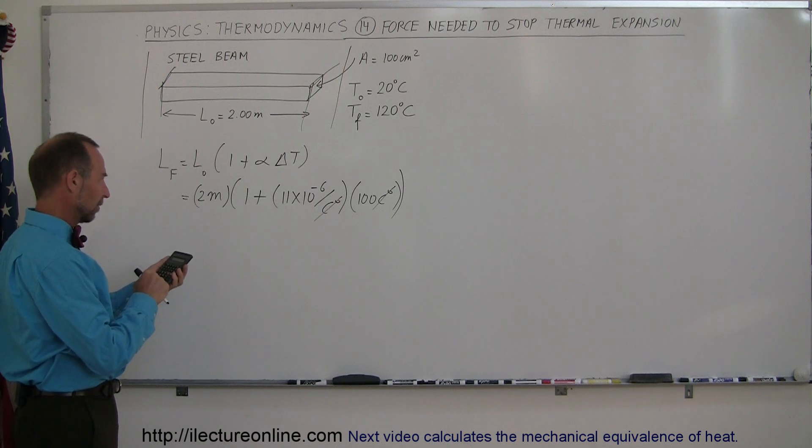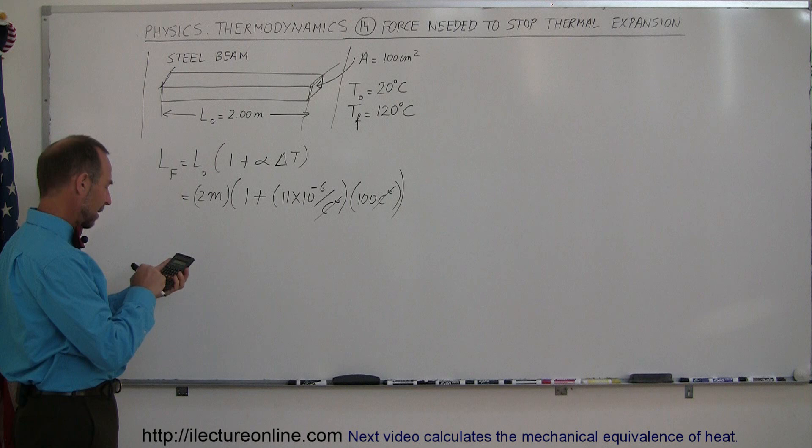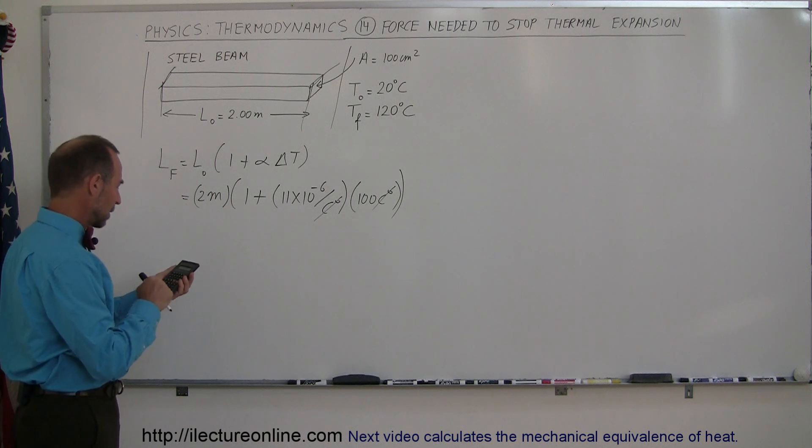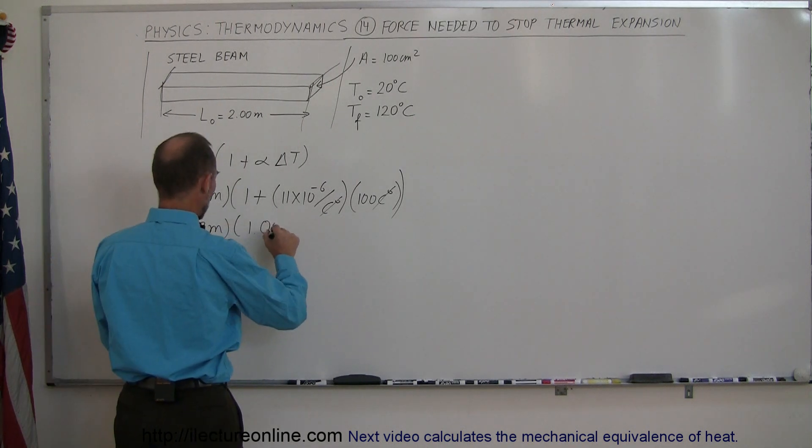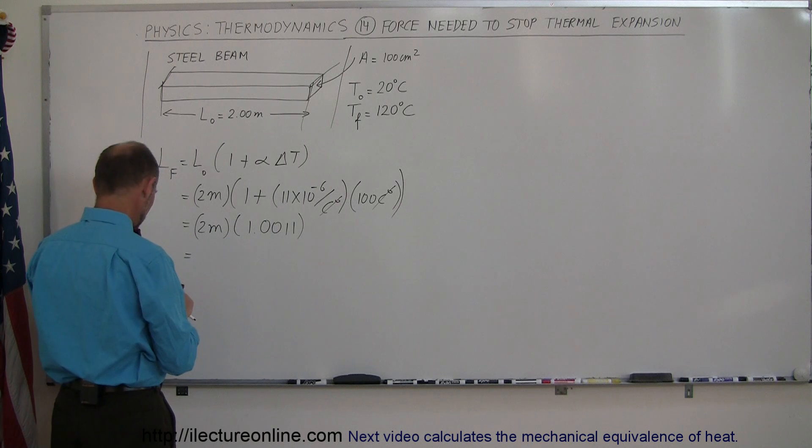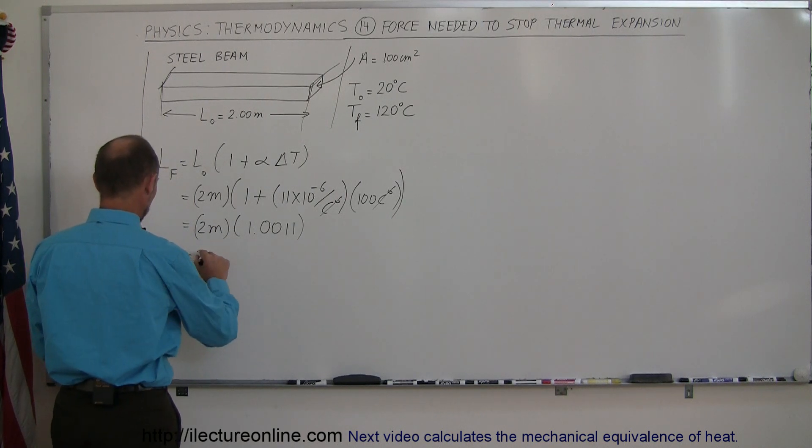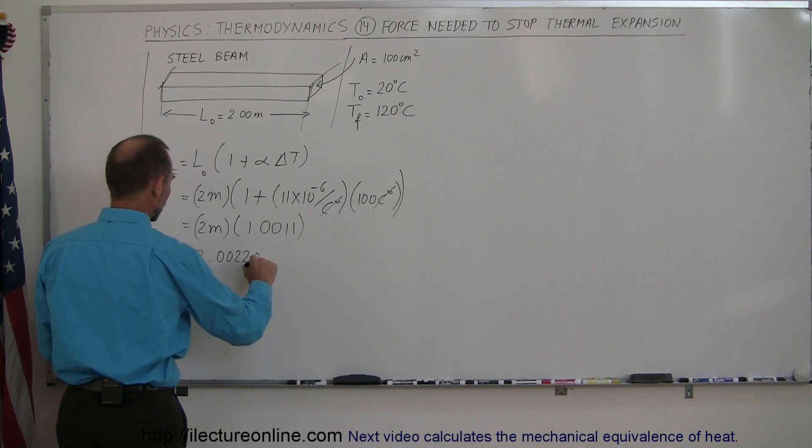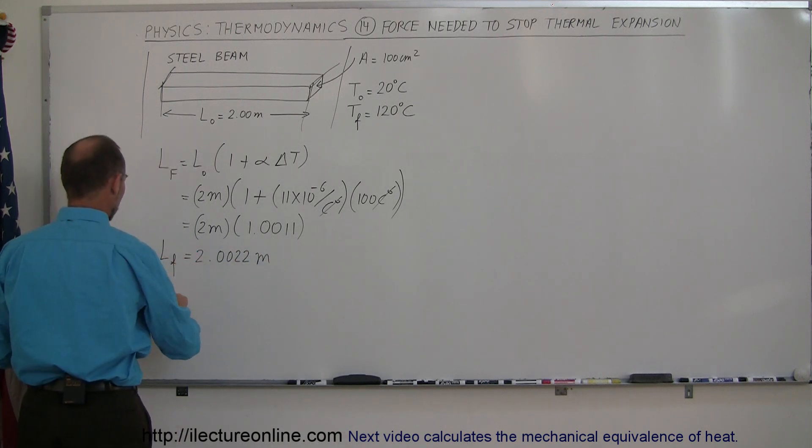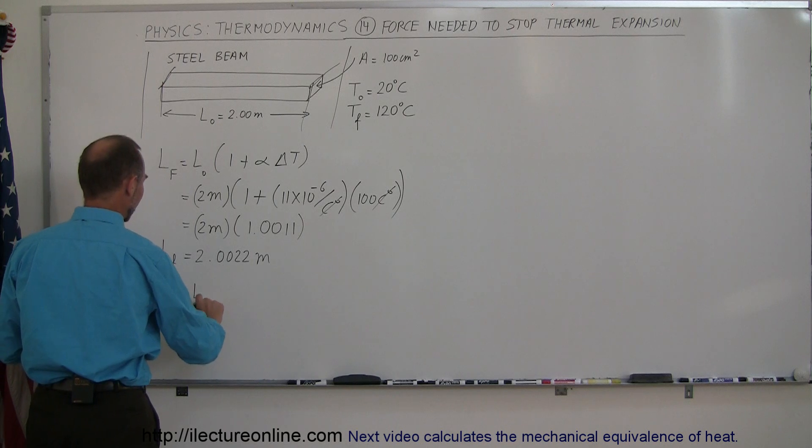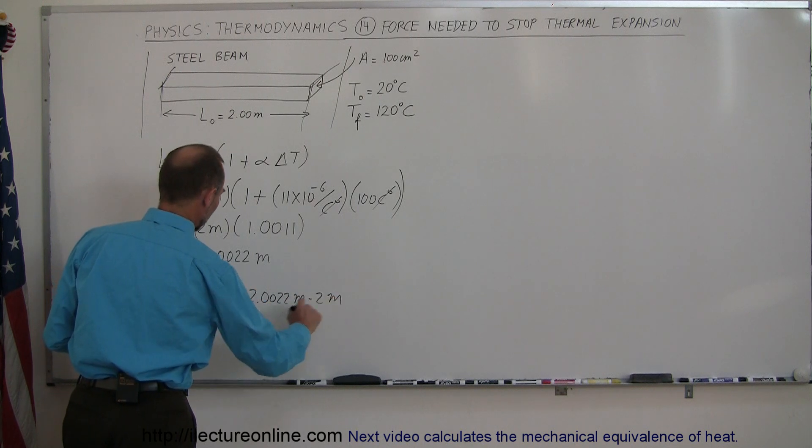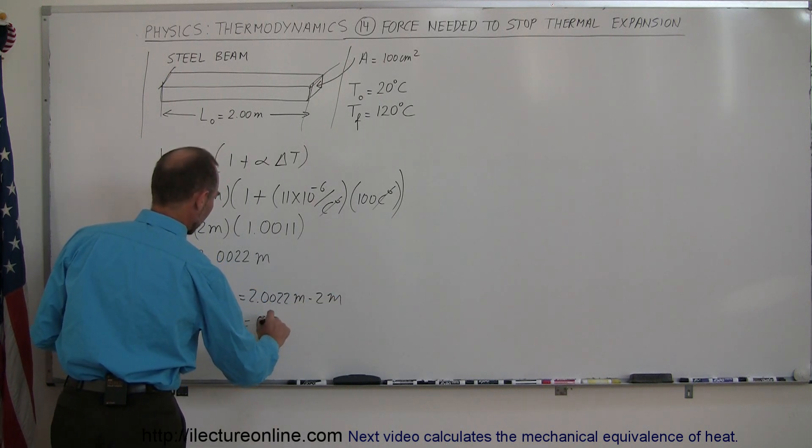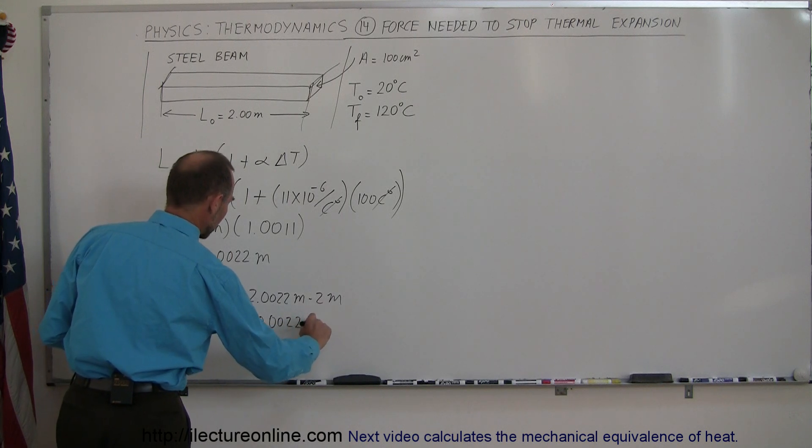So this would be 11E-6 times 100 plus one times two, so we get 2.0022 meters. That would be L final. The change in length equals L final minus L initial, which is 2.0022 meters minus 2 meters, and so that would be 0.0022 meters or 2.2 millimeters.